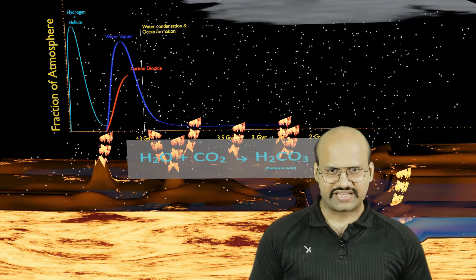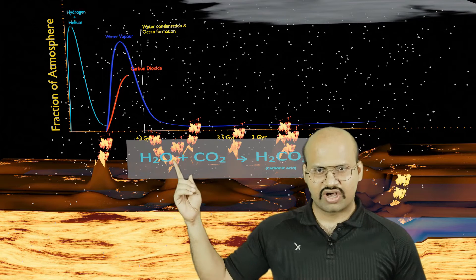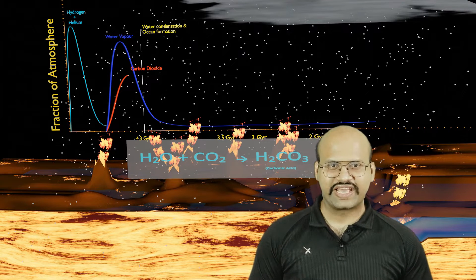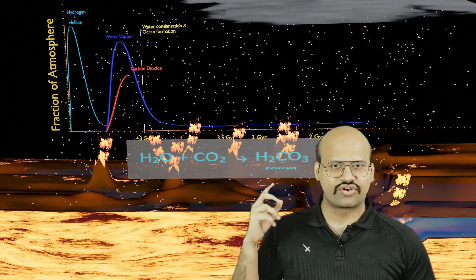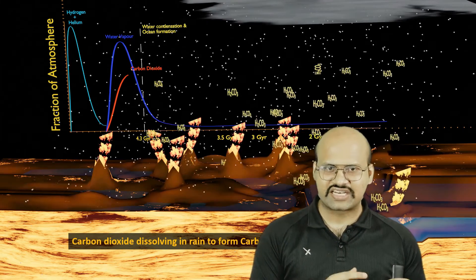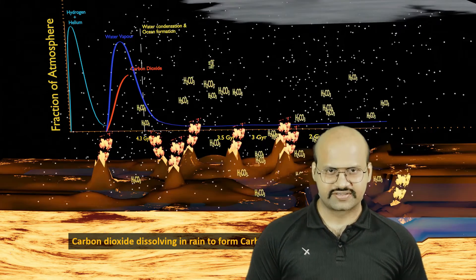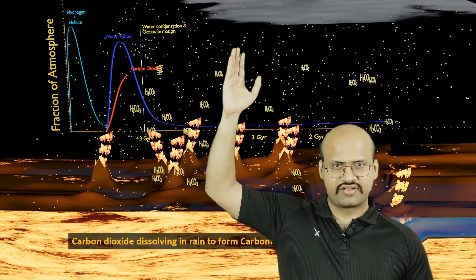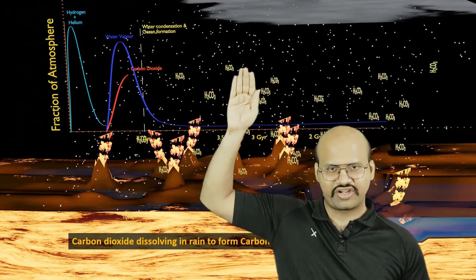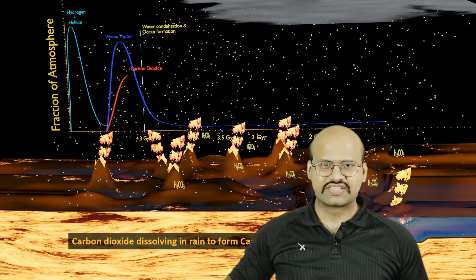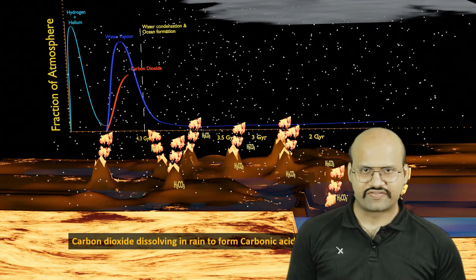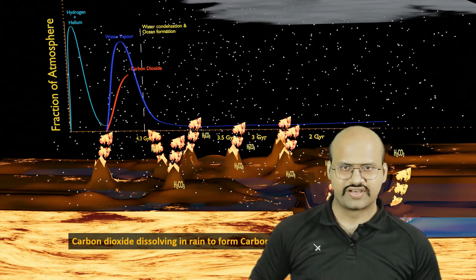We know that carbon dioxide dissolves in H₂O to form carbonic acid — even today during acid rain we can see a large amount of carbonic acid. So as it rained for hundreds and thousands of years, the water which came down absorbed the carbon dioxide from the atmosphere and brought the carbon dioxide down towards the land, removing a lot of CO₂ from the atmosphere.